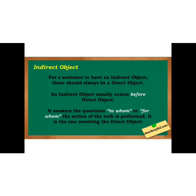The next is indirect object. For a sentence to have an indirect object, there should always be a direct object. An indirect object usually comes before the direct object. It answers the questions 'to whom' or 'for whom' — it is the one receiving the direct object. किसी भी जुम्ले में अगर indirect object होगा तो वहां पर direct object जरूर होगा। Indirect object की question बनाने के लिए 'to whom' या 'for whom' लेते हैं।